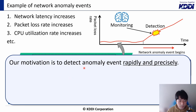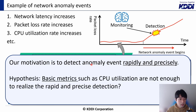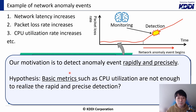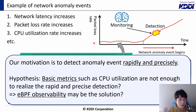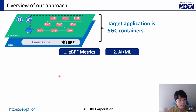To avoid such a situation, the monitoring system needs to detect network anomaly events as soon as possible. This is our motivation: to detect these events rapidly and precisely. Our hypothesis was that basic metrics such as CPU utilization rate are not sufficient to realize rapid and precise detection, because the amount of information in such basic metrics is very limited. So our idea was eBPF observability. Before jumping into the details, let me show you an overview of our approach.